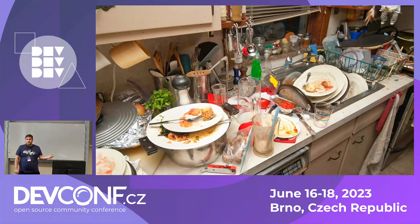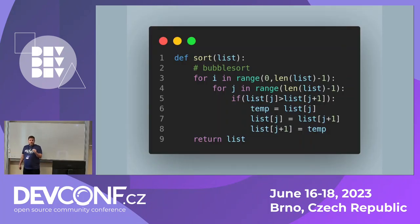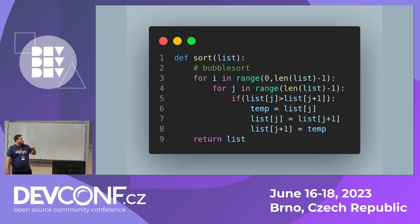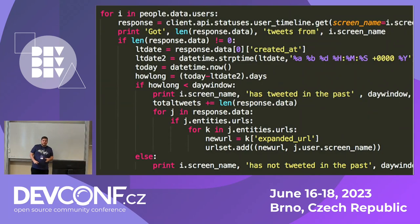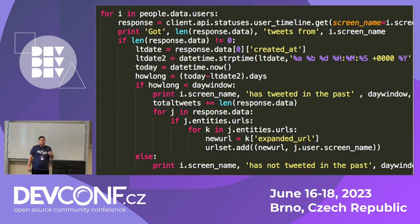A very similar thing happens with code. It can all begin with a single unoptimized function that gets left behind, like this bubble sort here, or even some code that could be refactored. The main issue here is that bad code has gravity, as it tends to attract even more bad code.